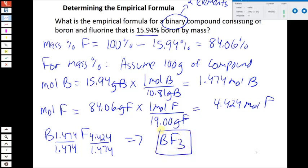If given a mass percent, it's the same series of steps — we just assume the percentages are gram amounts when presuming 100 grams of compound. 100 grams is the most convenient to start with when given percentages. The standard way to write the formula is with whole numbers only. We don't include coefficients of 1, so the answer is BF3. Technically, you could write B1.47F4.42, and that gives you the right ratio, but the standard form normalizes to whole numbers.